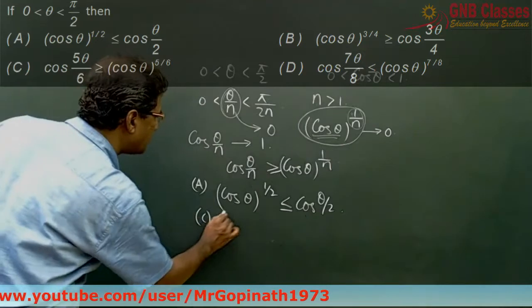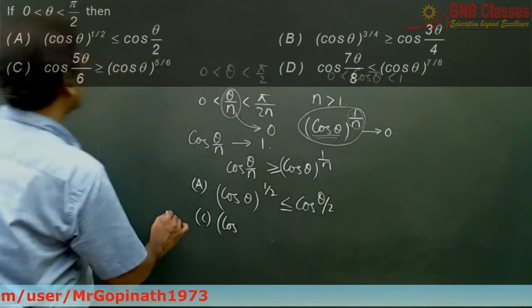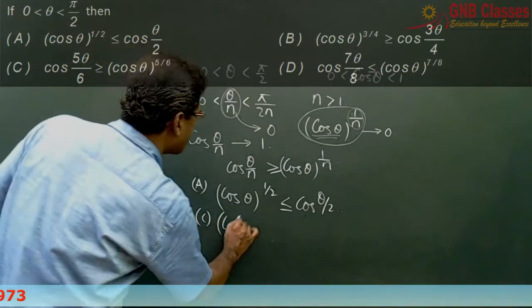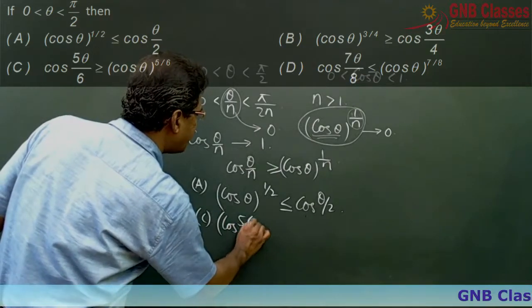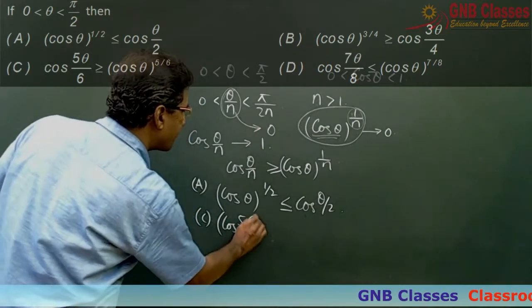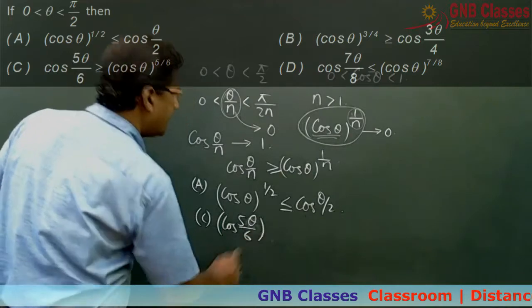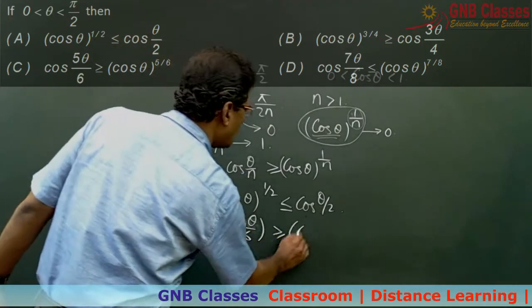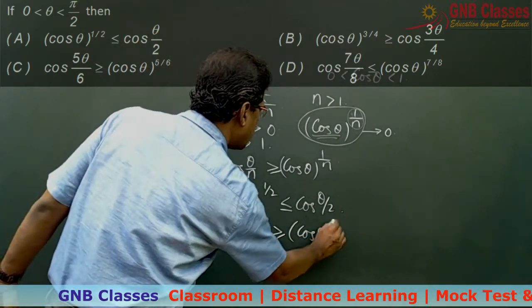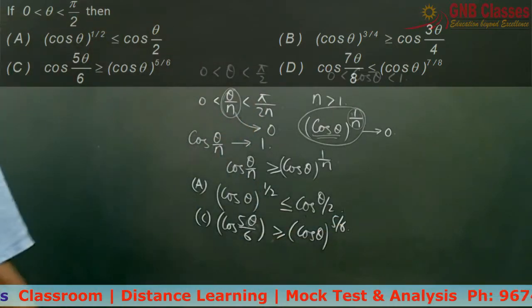What is the option C given to you? They have given you cos 5 theta by 6, which is greater than equals to cos theta to the power 5 by 6.